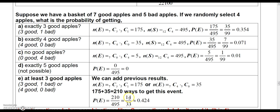and we get the probability, and we reduce it to 14 out of 33, or we can write it as a decimal, 0.424.